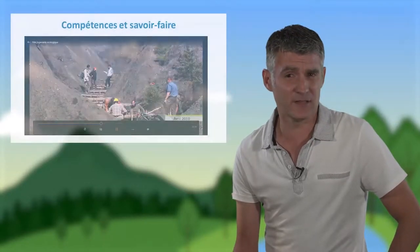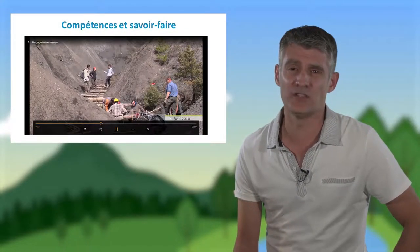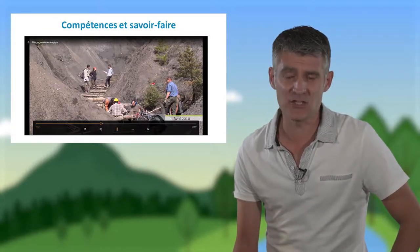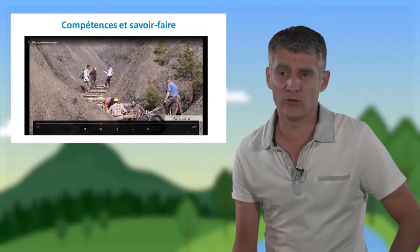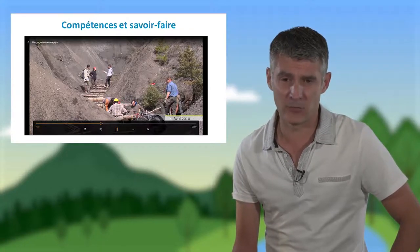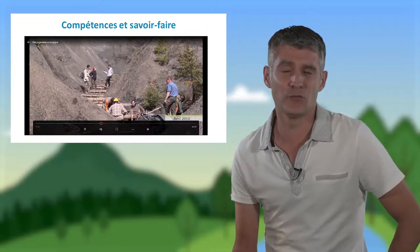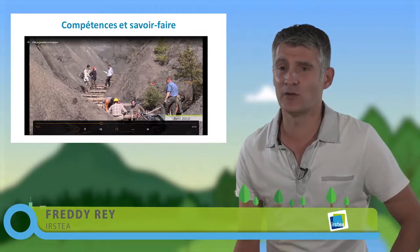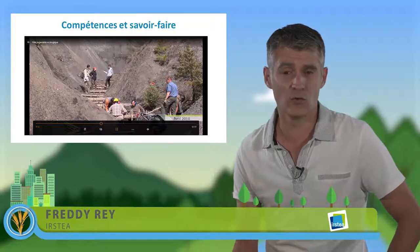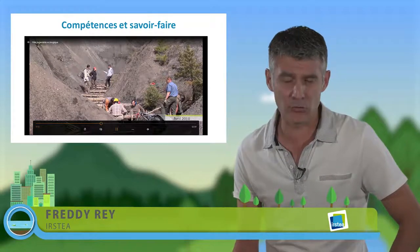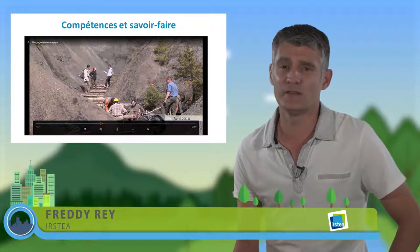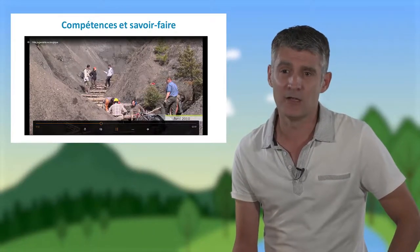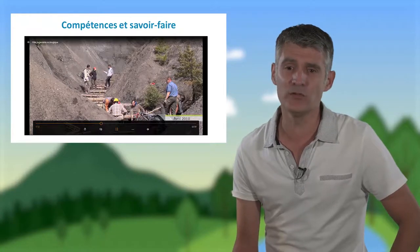Il faut un certain savoir-faire et des compétences en génie végétal pour pouvoir choisir les espèces, choisir les ouvrages et les dimensionner, en répondant à deux principes élémentaires. Le premier est de faire en sorte que les ouvrages et la végétation résistent bien aux contraintes, qu'elles soient d'ordre hydrologique, mécanique ou climatique. Le deuxième principe, c'est que ces ouvrages et la végétation remplissent bien les fonctions qu'on leur a assignées au début des projets.